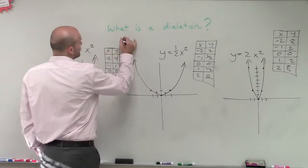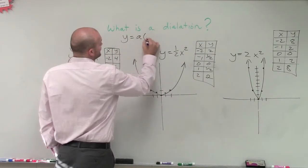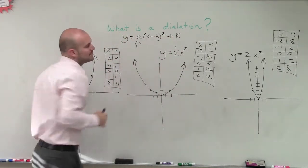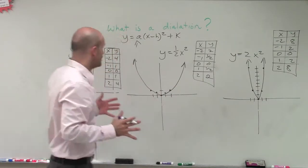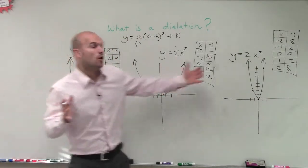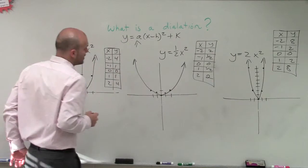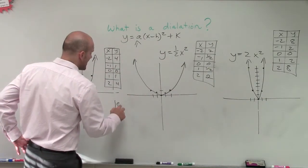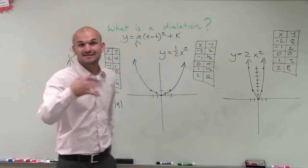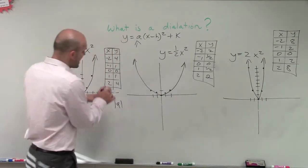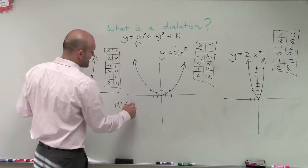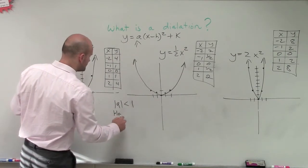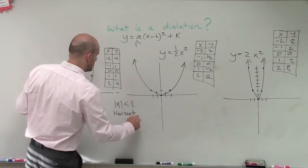Well, when we look at vertex form, y equals a times x minus h squared plus k, a is going to be our value that's going to tell us, are we going to stretch this graph, or is it going to be compressed? And the rule that we have for this is if the absolute value of a, because remember if it's negative, that's going to be dealing with reflections.